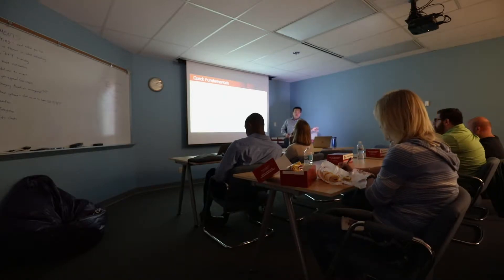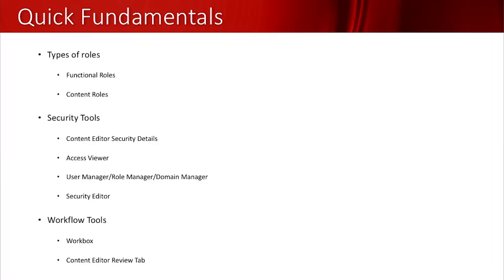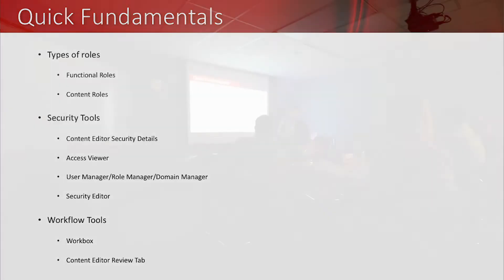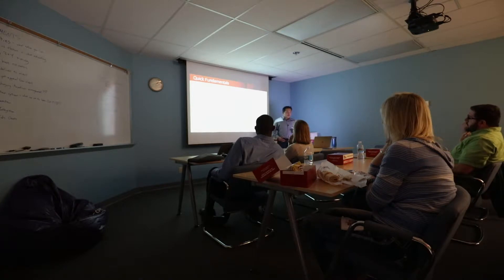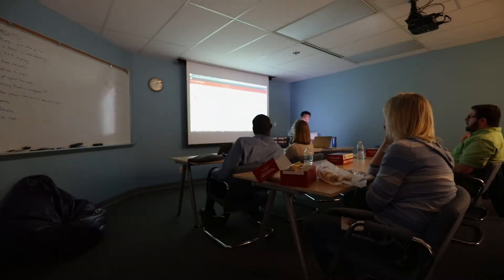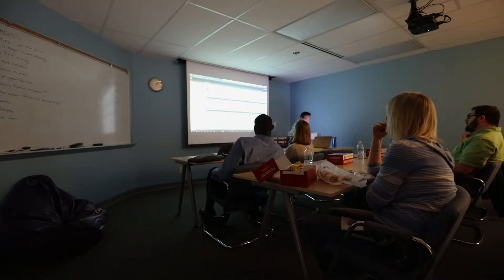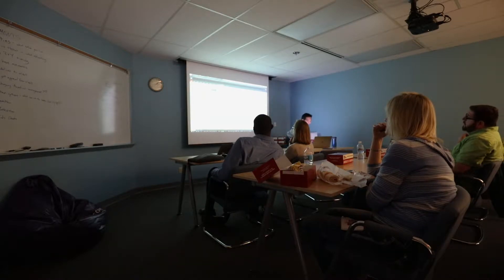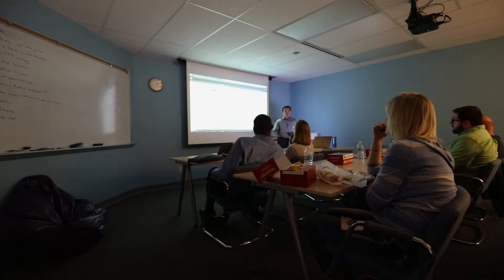There's the security roles area, including content editor security details, the access viewer, user manager, role manager, and domain manager — though you rarely use domain manager because you add a domain in your config file. There's also the security editor, where you actually assign access. Have you guys ever seen the content editor security details? If you go to the content editor, go to Security and then Details, a new tab comes up showing the explicit rights on a particular content item.